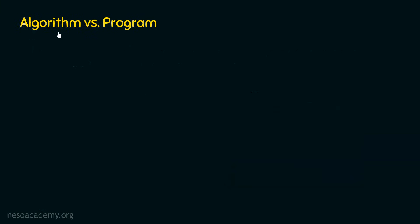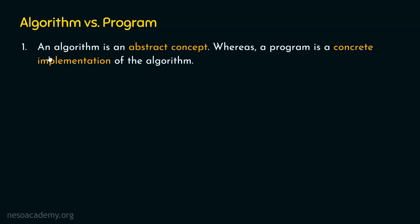Let's dive into algorithm versus program and understand the difference by considering several points. Point number one: an algorithm is an abstract concept, whereas a program is a concrete implementation of the algorithm. An algorithm is simply an abstract concept — it is just an idea. It is non-implementable. We cannot implement an algorithm in a computer; we cannot provide an algorithm to a computer and expect it to produce an output.